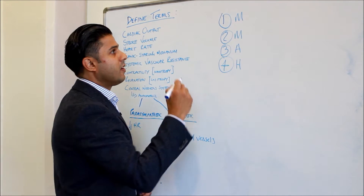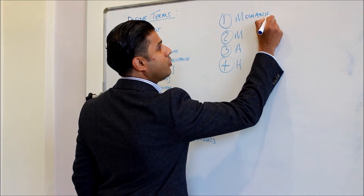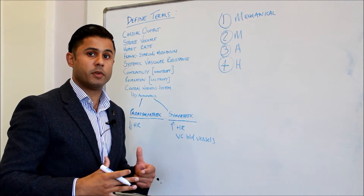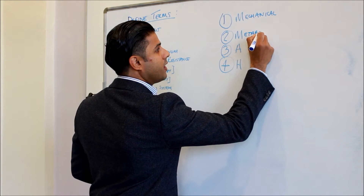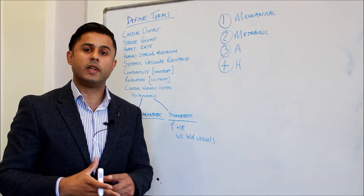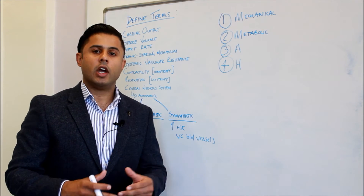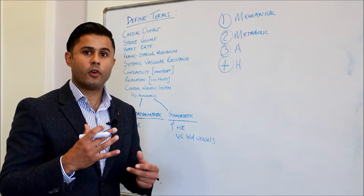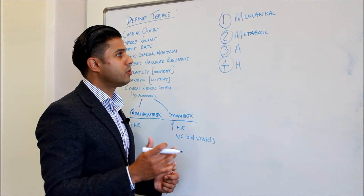The first change is mechanical — a mechanical change in the body to do with the skeletal muscle pump and the respiratory muscle pump. Then we're going to get metabolic alterations within the body — metabolic changes occurring in the muscle. Because as we exercise, we need oxygen for glycolysis to produce ATP. So there's an increased demand from the muscles for oxygen, demanding more blood flow, and we get an increase in vasodilation of the skeletal muscle blood vessels.